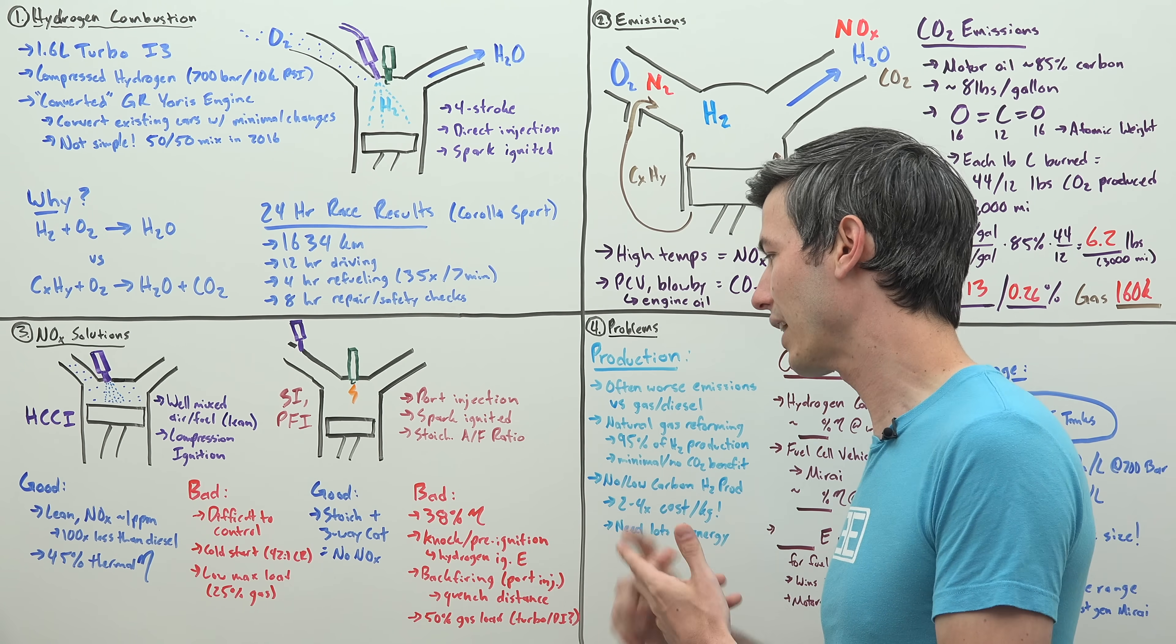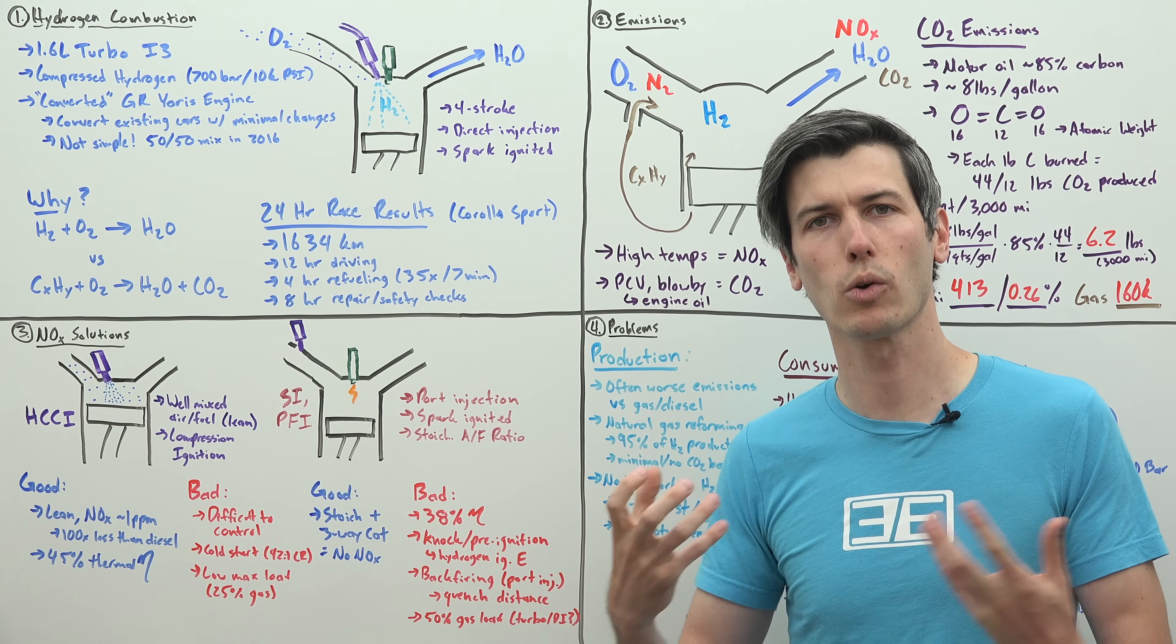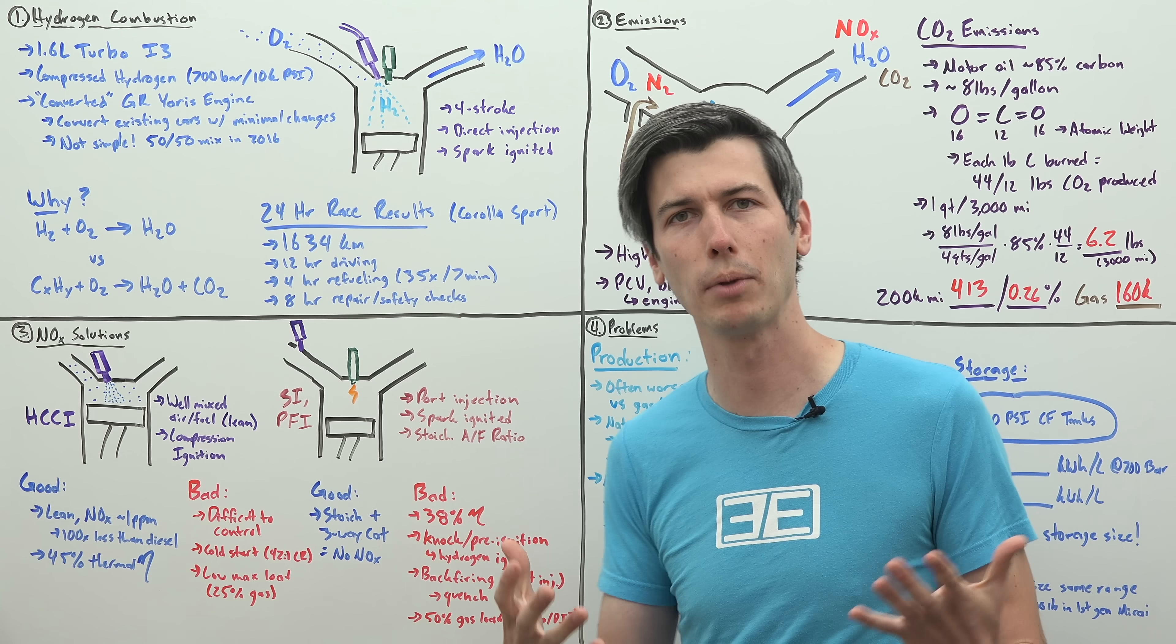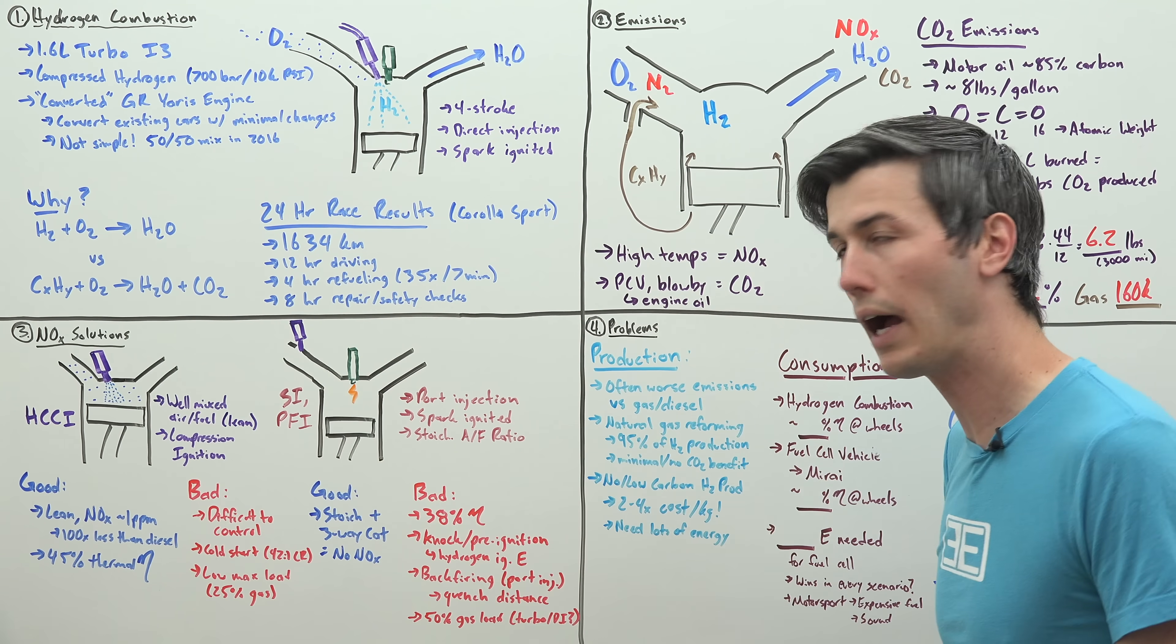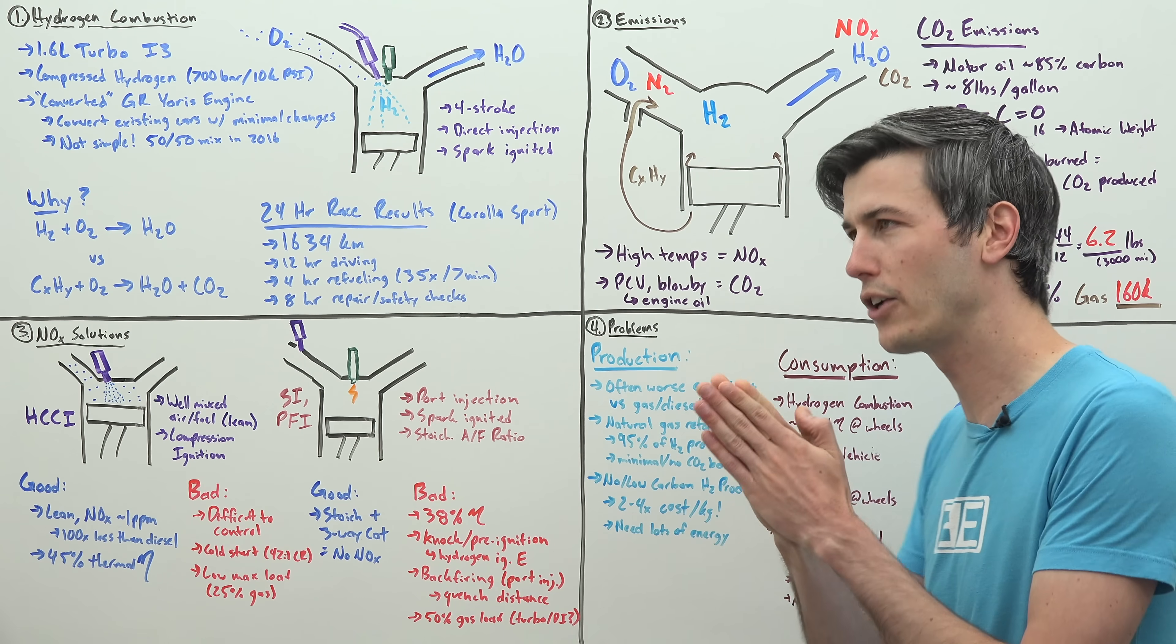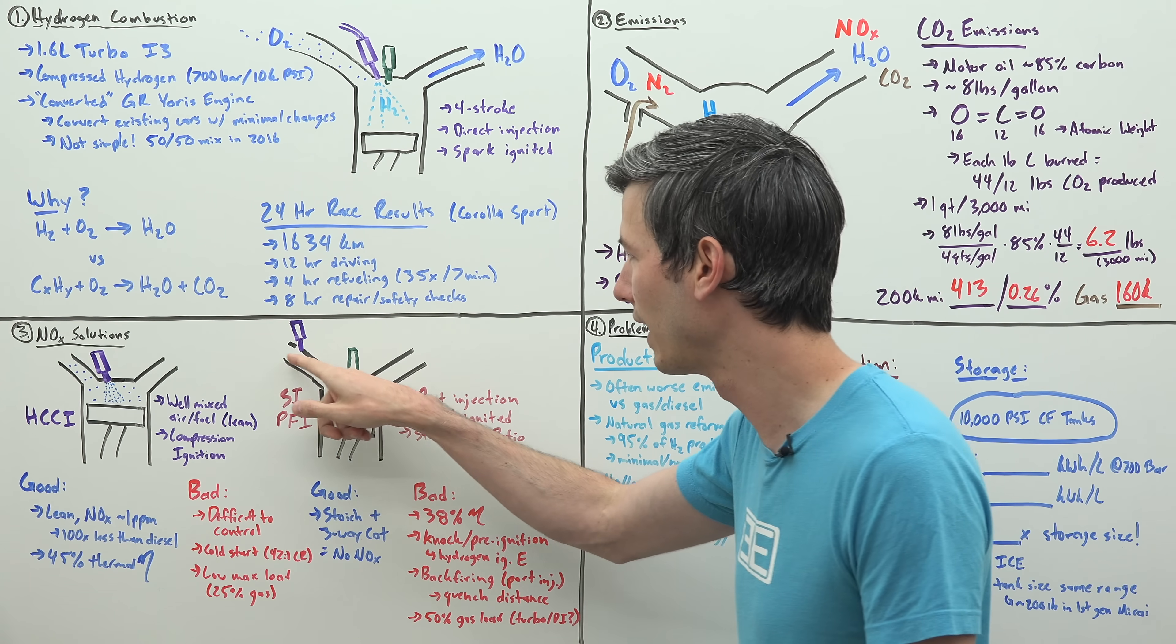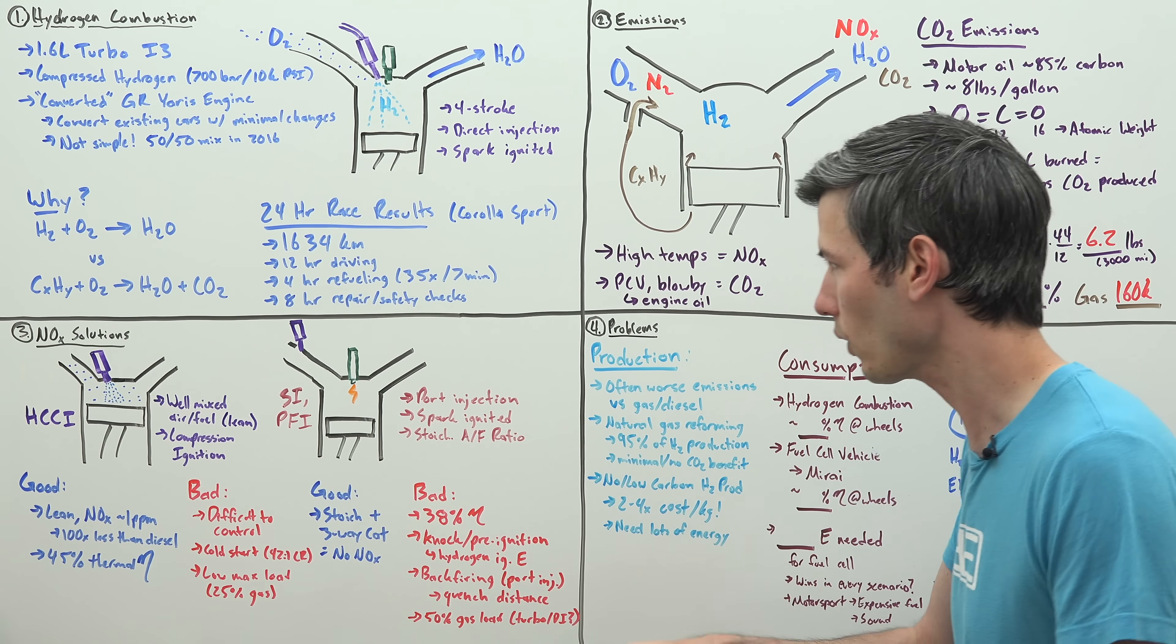The other bad news: knock and pre-ignition are a big problem with hydrogen engines because the ignition energy required for hydrogen is very low. Also, hydrogen has a problem with backfiring if you have port ignition. Hydrogen combustion can travel through a very small crevice. So if you have your intake port slightly open, the hydrogen combustion could work its way back into the intake where you're spraying that fuel in.